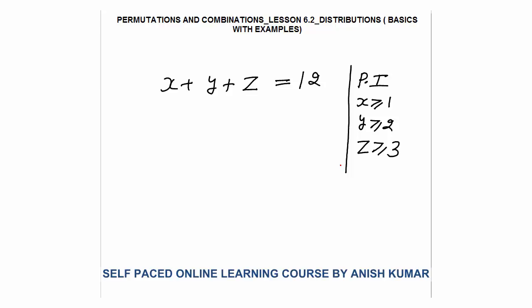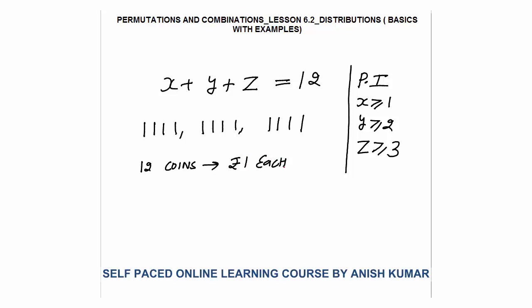We can understand this question differently. I have 12 coins of 1 rupee each, and I want to distribute these 12 coins among 3 students x, y, and z. This becomes a distribution of identical to different — such that student x gets at least 1 coin, student y gets at least 2 coins, and student z gets at least 3 coins.